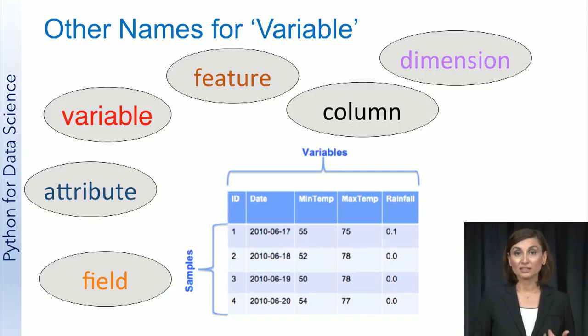Similarly, there are many names for variables in addition to feature. Some other terms for variable are feature, column, dimension, attribute, and field. All of these terms refer to the same specific characteristics for each sample in your data set.